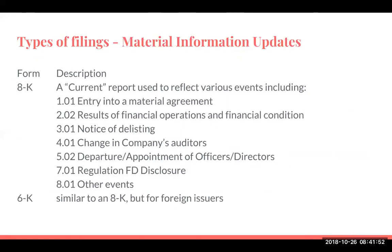The other filing you'll find pretty frequently is Form 8-K, which companies use to ensure they're complying with Reg FD — that full and fair disclosure. There are a variety of Form 8-K items: 1.01 is the entry into a material agreement. Results of financial operations and condition generally will be filed when the quarterly is filed. Notice of delisting — if a company fails to meet the standards of the NASDAQ or NYSE, it will be subject to delisting. Change in company's auditors. Departure or appointment of officers and directors. Reg FD disclosure. And other events. Going back to Alibaba, they will use Form 6-K not only to show their quarterly report, but also to make other informational disclosures as well.